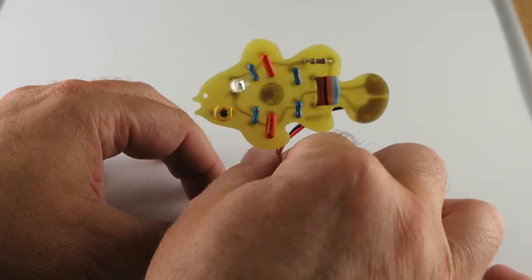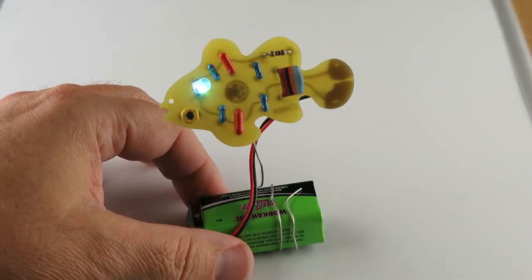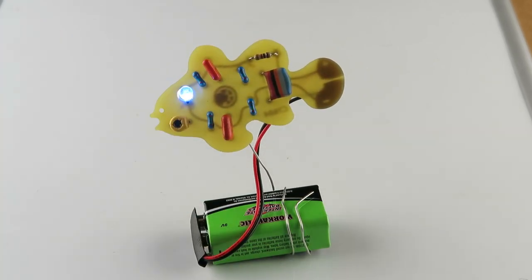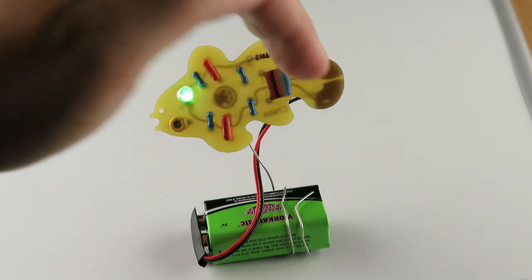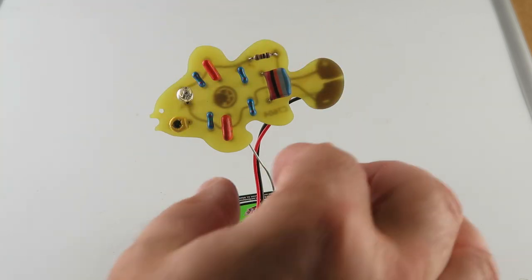And then you can kind of turn it this way and that and have it shine there. It's a lot of fun. This is one of our most unique kits because the PC board has been routed around to create that shape of the fish.